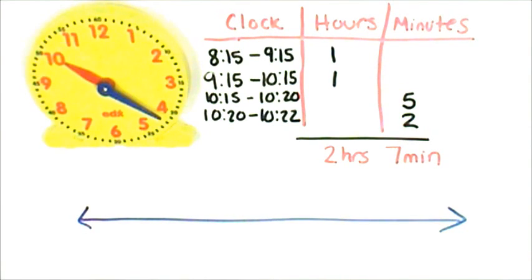Let's use an open number line or timeline to show how long Amy's practice was. First, I'll write the start time, 8:15. Then I'll write the ending time, 10:22.